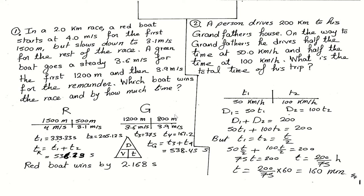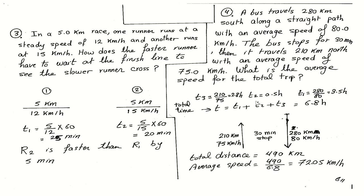To clarify: this person moved half of the time at 50 kilometers per hour and the other half at 100 kilometers per hour, traveling from his house to his grandfather's house — not a round trip.